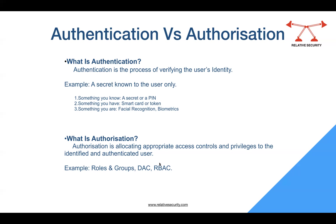Even if your system is connected to the network, you may be unable to print or unable to access a shared folder. That means your authentication is fine — you are a valid user — but you do not have the necessary privileges to use the printer or access a certain shared folder. This is where authorization comes in.